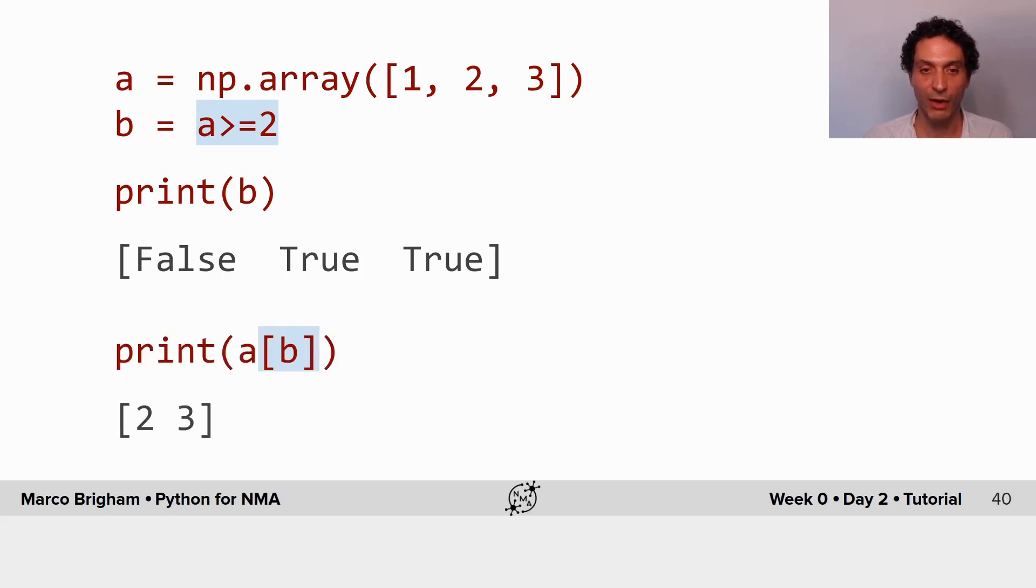So now if I print my initial array a but using my boolean indexes, I get all the elements of a that respect the condition that are equal or larger to 2.